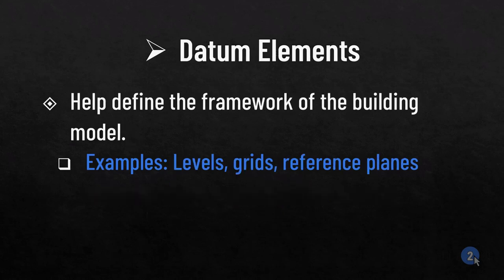Datum elements are elements that help define the framework of a building model. Examples are levels, grids, and reference planes. These help define the context — for instance, Level 1 is at 0, Level 2 is at 15 feet, and so on — building out the framework of your building model.